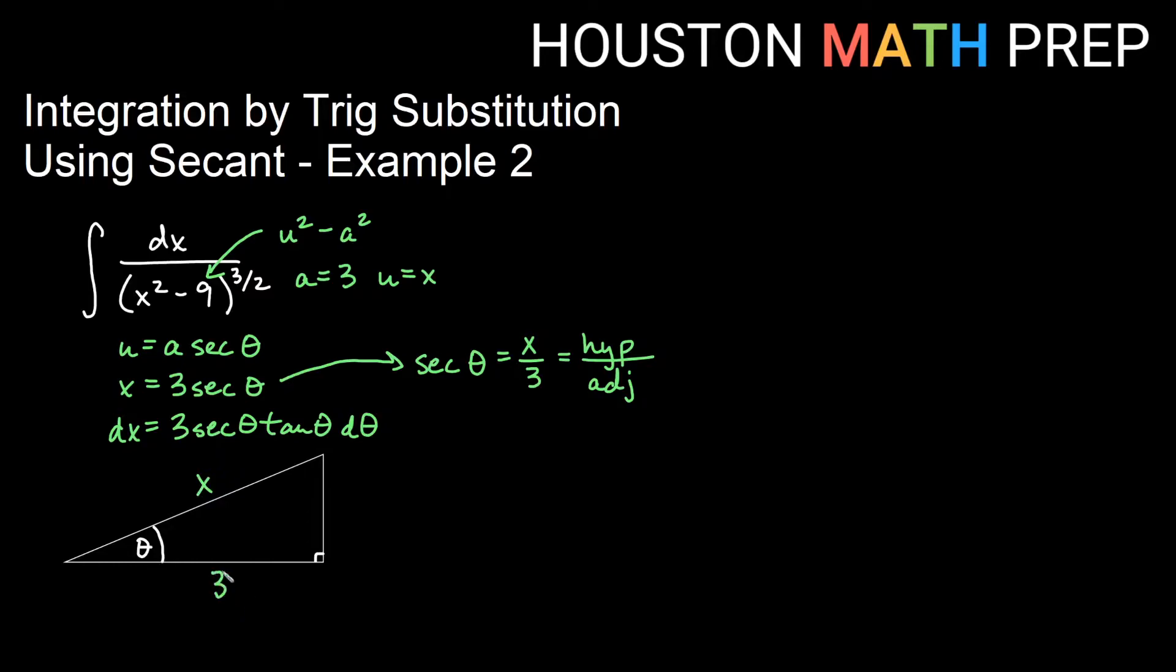Pythagorean theorem that this squared plus this squared equals this squared tells me that this will be the square root of x squared minus 9. You can work that out on your own if you're not sure or you don't believe me. And now we'll substitute.